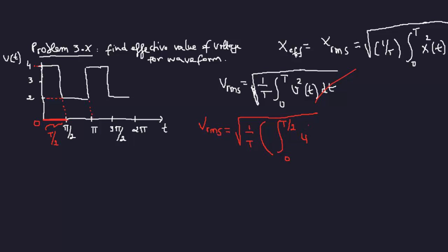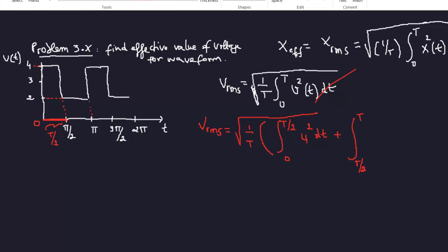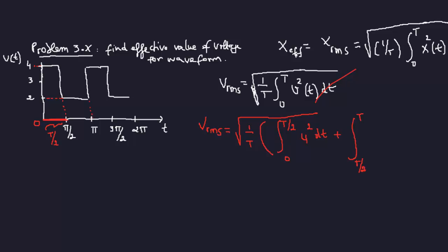So that's four squared dt plus another one. Now it's going to be from t/2 to the actual period t, and now from t/2 this one over here the voltage is two. The voltage is two, so I'm integrating two, two squared dt.